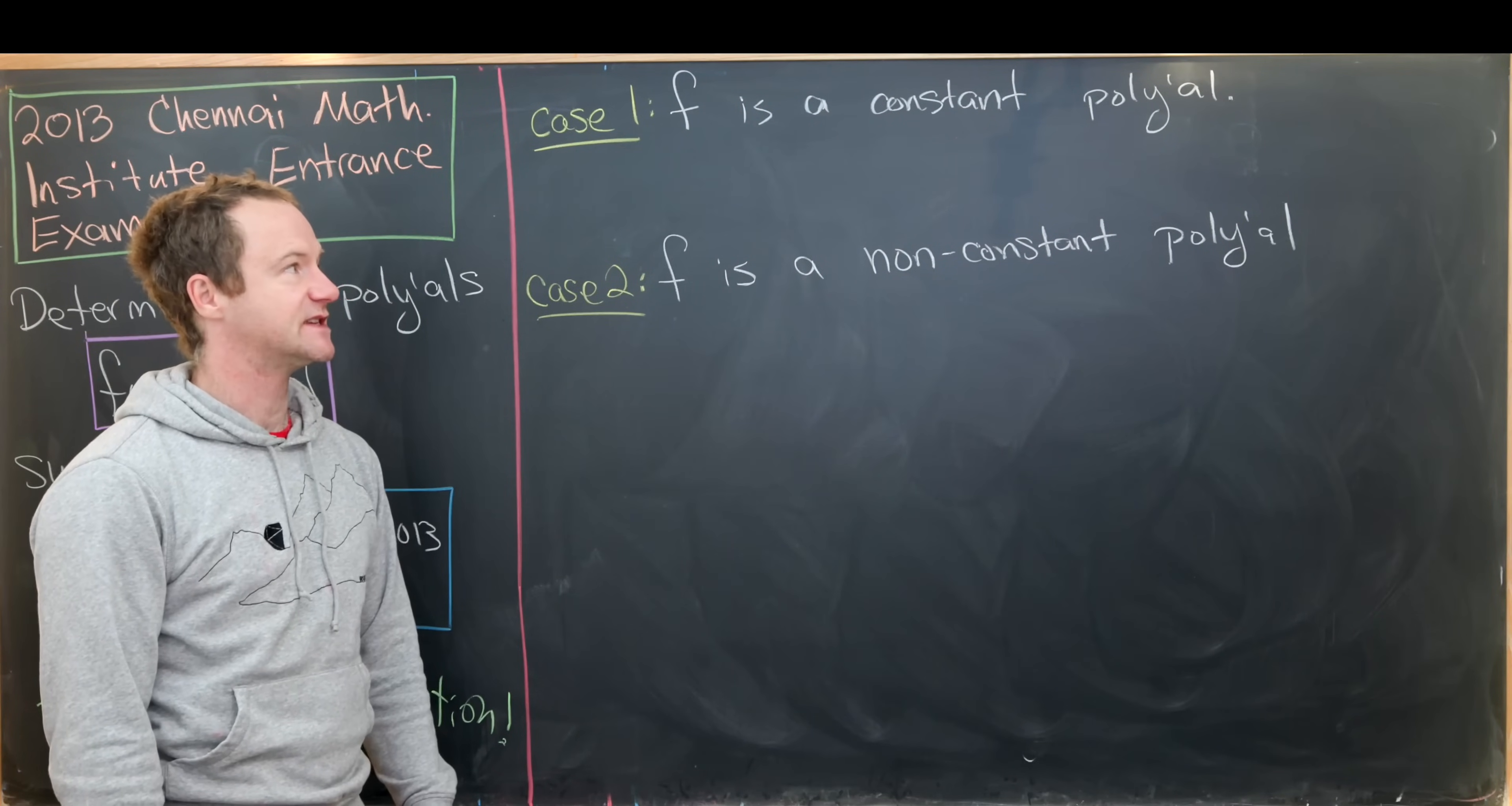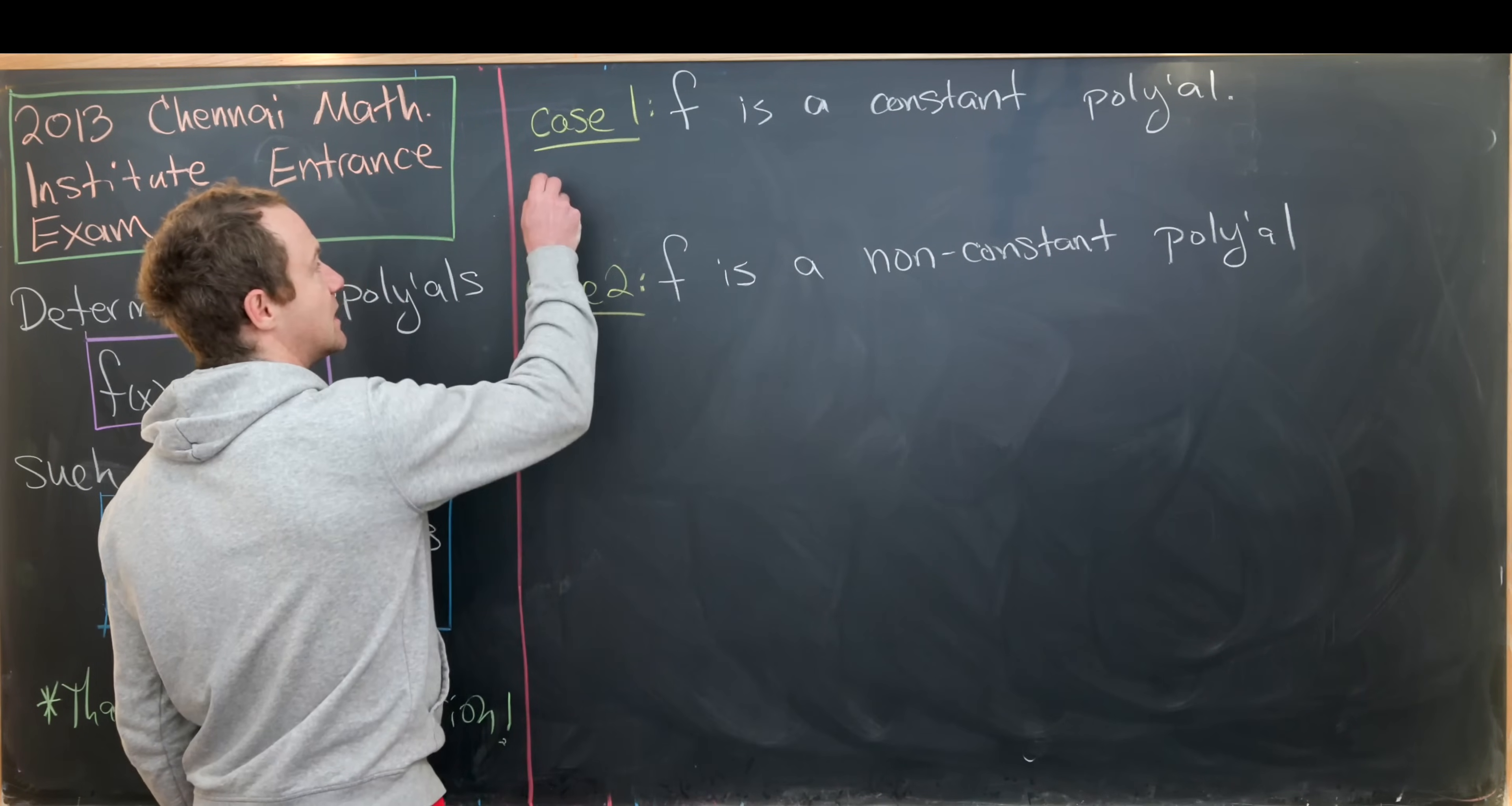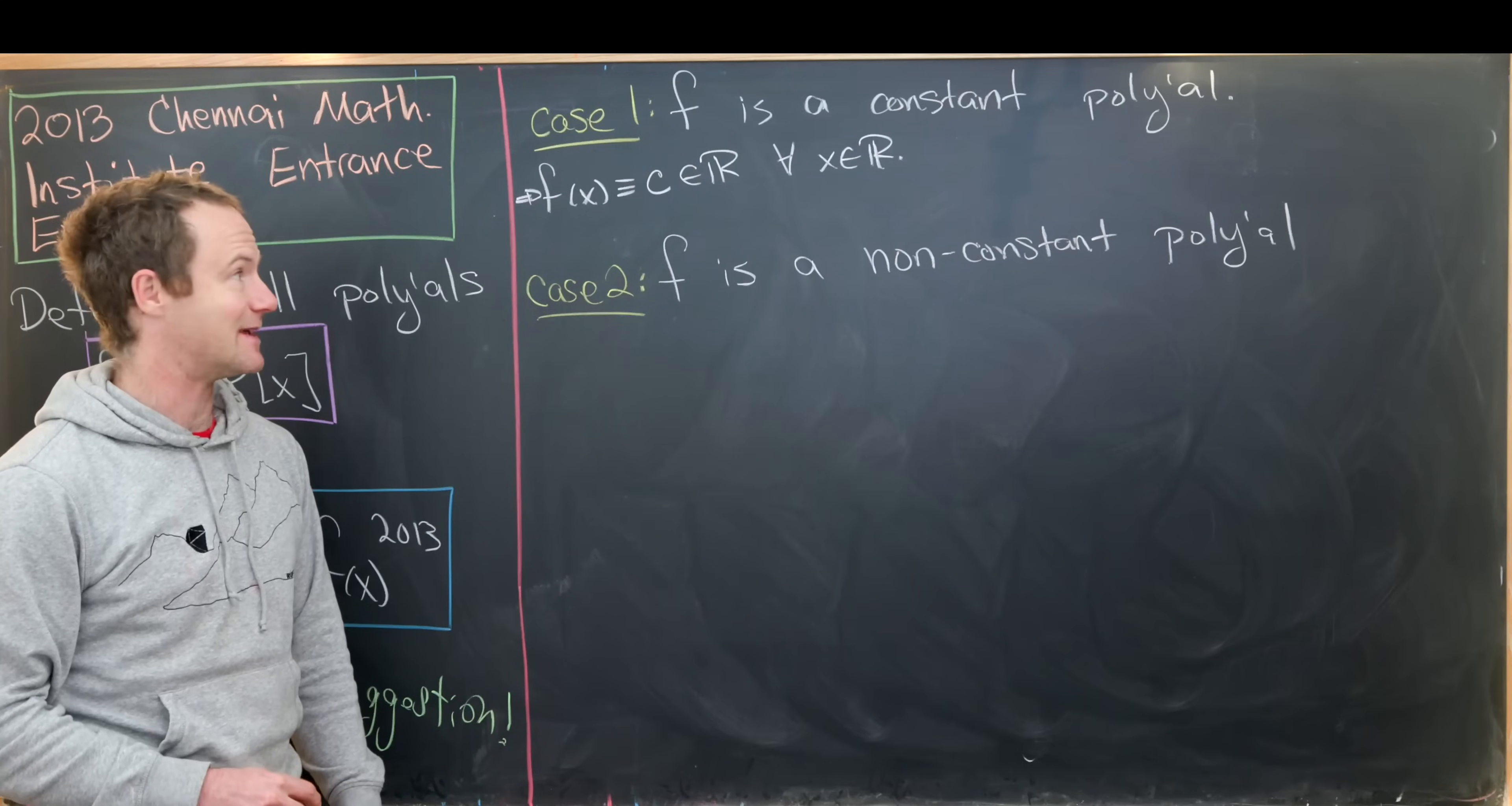The first case is if f is a constant polynomial. This is the boring case or the most quick case. The second case will be f is a non-constant polynomial. So let's jump into this first case. If f of x is a constant polynomial, that means f of x is identically equal to c, which is a real number, and this is going to be true for all real numbers x. That's what it means to be a constant polynomial: regardless of the input we always get the same output.